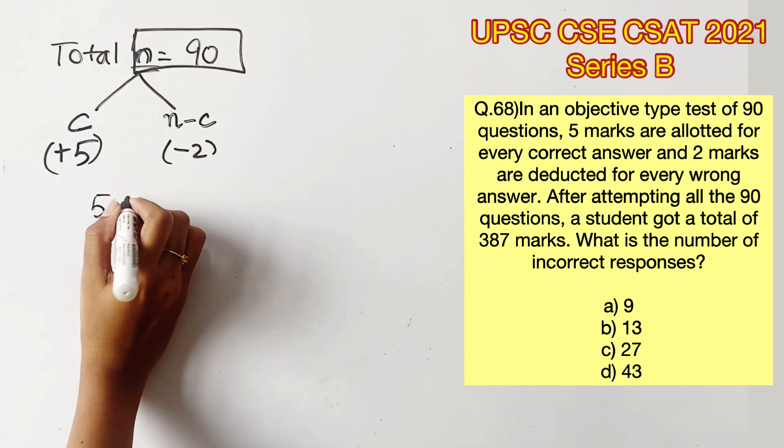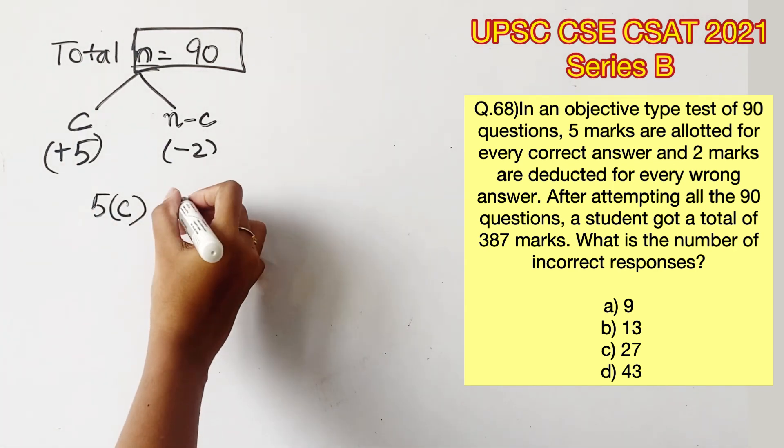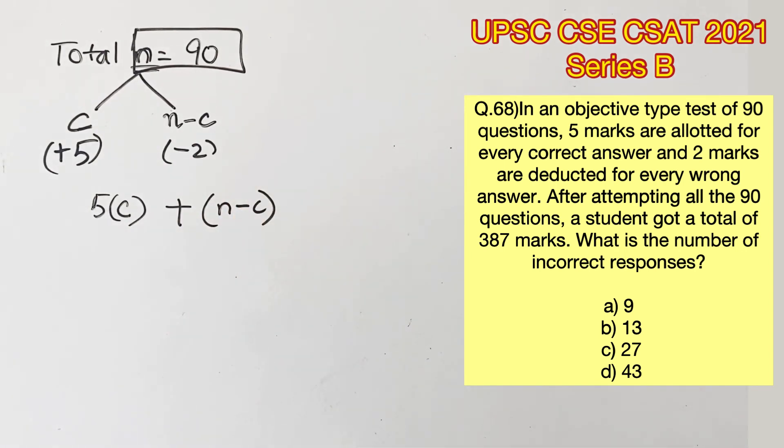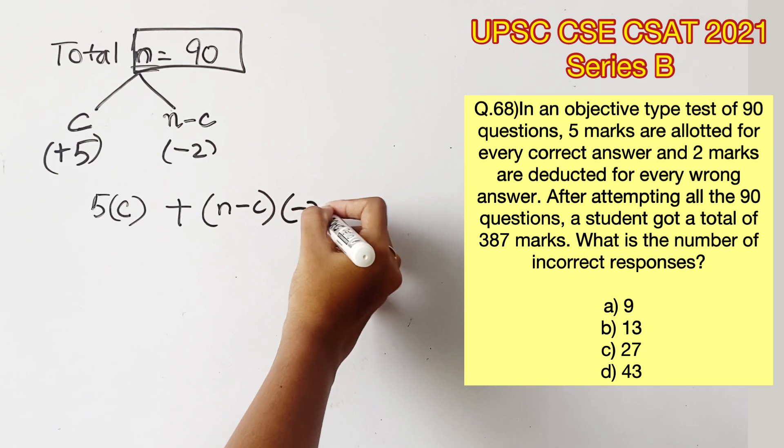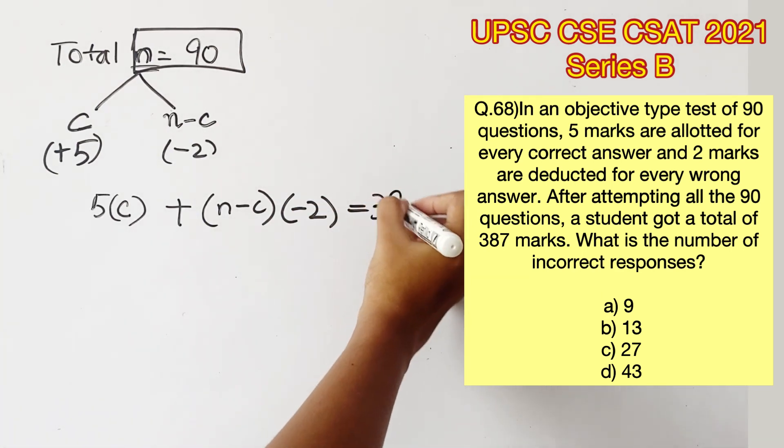This can be represented as 5c, where c is the number of correct responses, plus n minus c, where n minus c is the number of wrong responses, into minus 2, because for every wrong response 2 marks are going to be deducted, equals 387.